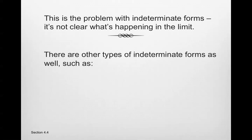There are other types of indeterminate forms as well: 0 divided by 0, infinity divided by infinity, 1 raised to infinity, 0 raised to the 0 power, infinity raised to 0, infinity minus infinity, or 0 times infinity. Because all of these are unclear — for instance, infinity minus infinity: what is that? We don't know. So we have to do something else to figure out what is going on in that limit.